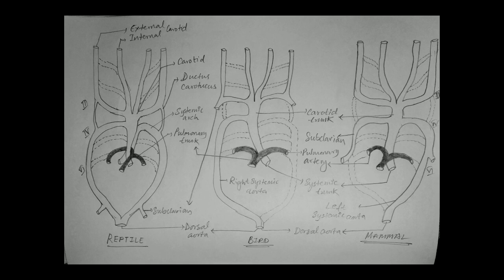The left systemic arch, also the fourth one, arises from the right ventricle and carries deoxygenated or mixed blood to the body through the dorsal aorta. The pulmonary trunk is the sixth modification — it also emerges from the right ventricle and carries deoxygenated blood to the lungs for purification.